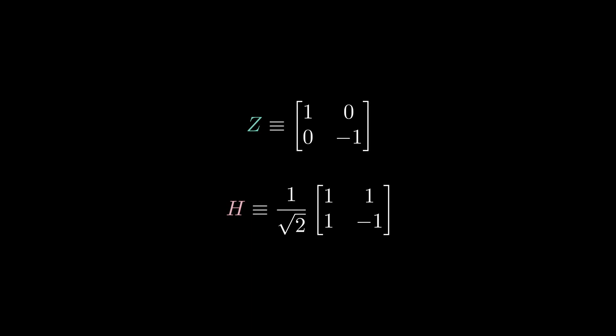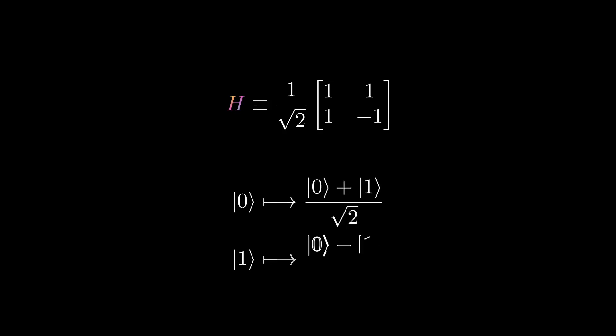Two important gates are known as the Z and the Hadamard gate. The Z gate just flips the sign in front of 1, but the Hadamard gate is actually much more interesting. It produces the following post-transformation states when initialized with 0 or 1. To understand how this transformation works, let's go back to the Bloch sphere.